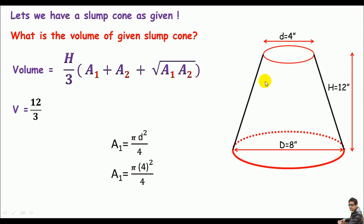So 12 by 3 times 12.566 square inches plus a2. The bottom is also a circle so I can use π d squared divided by 4 as the bottom area which is a2. The diameter is 8 inches so π times 8 squared divided by 4 equals a2 which is 50.265 square inches. Put this value in the formula plus square root of a1 and a2.